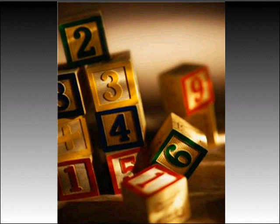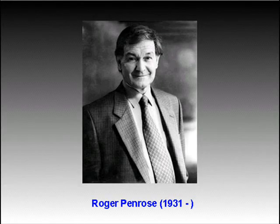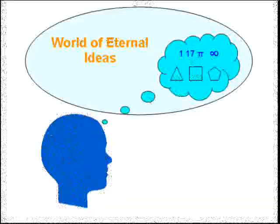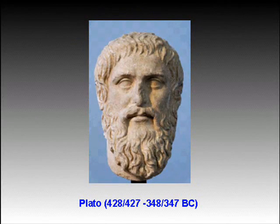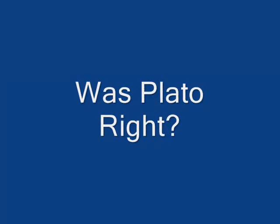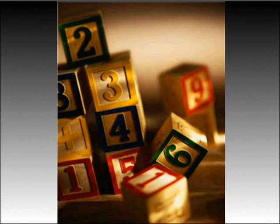Even today, many mathematical physicists such as Roger Penrose believe that mathematical ideas have their origin in the Platonic world of ideas. Thus, Platonism continues to be an influence in contemporary science. So, was Plato right? Is the world made of numbers in some way? If not, why do mathematical laws describe the physical world so well?